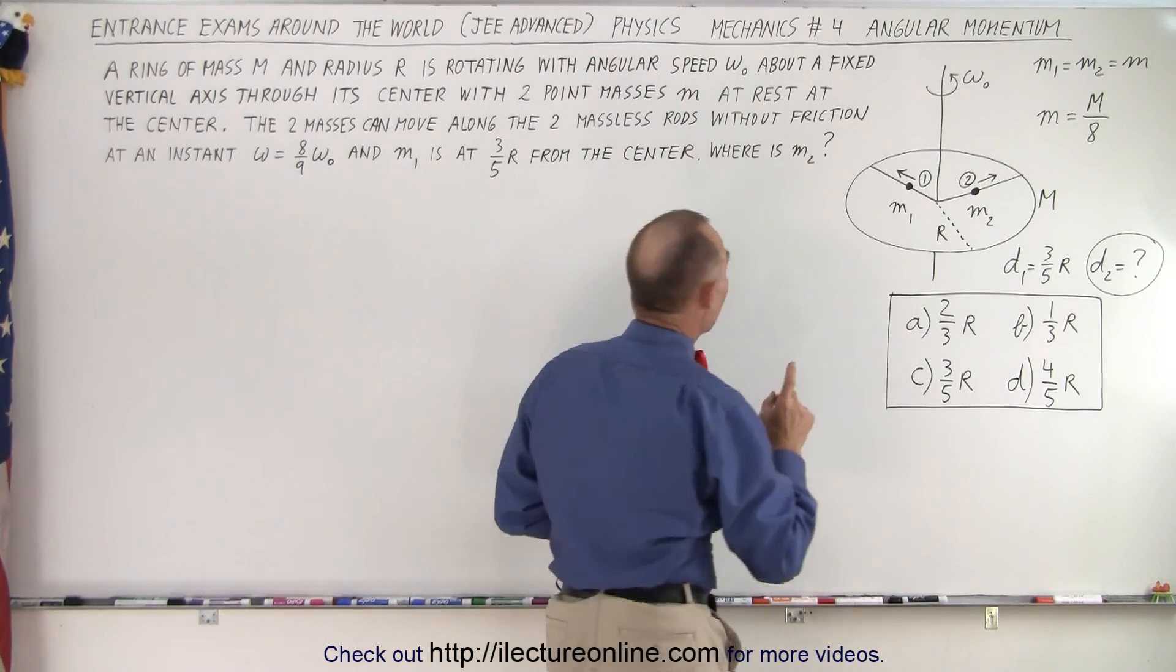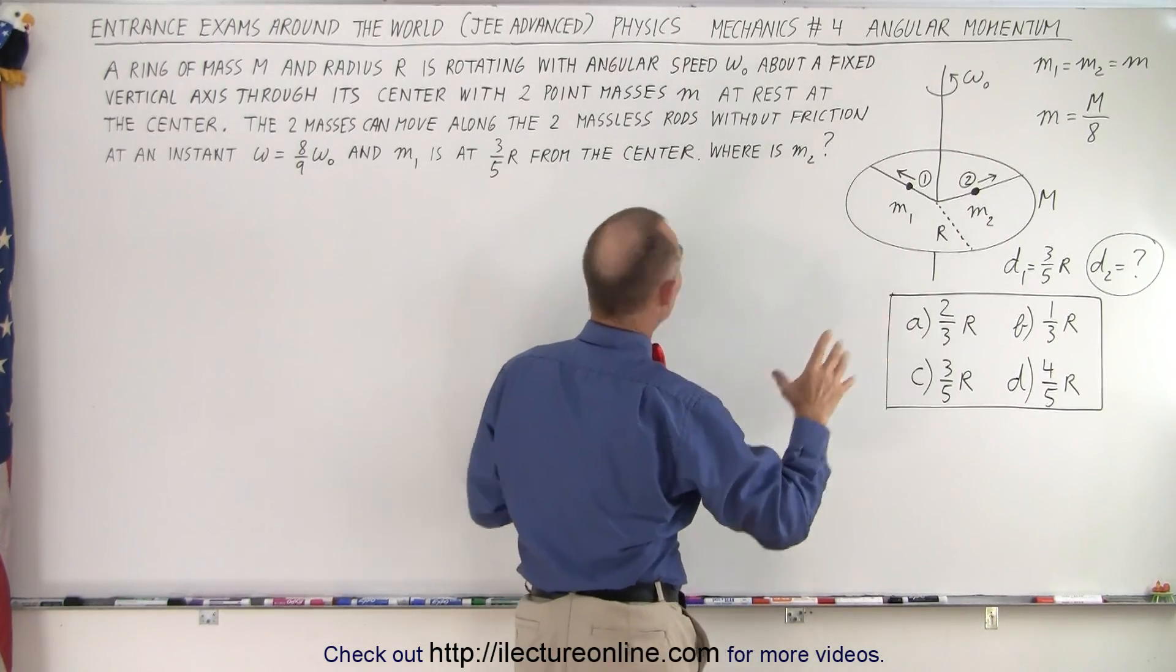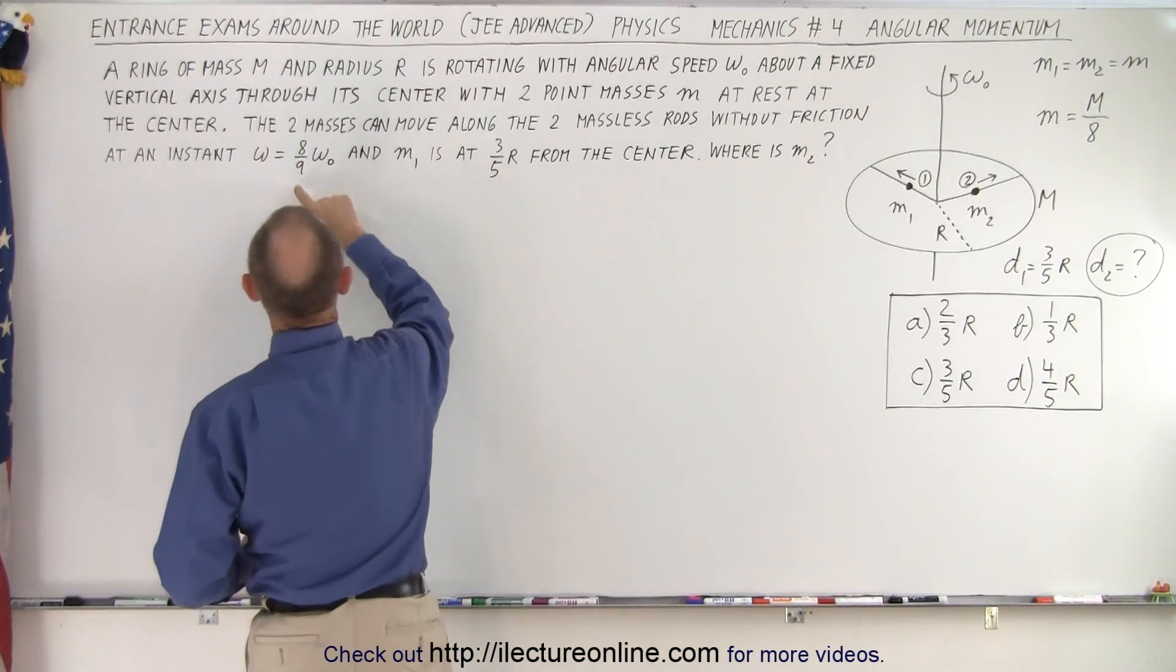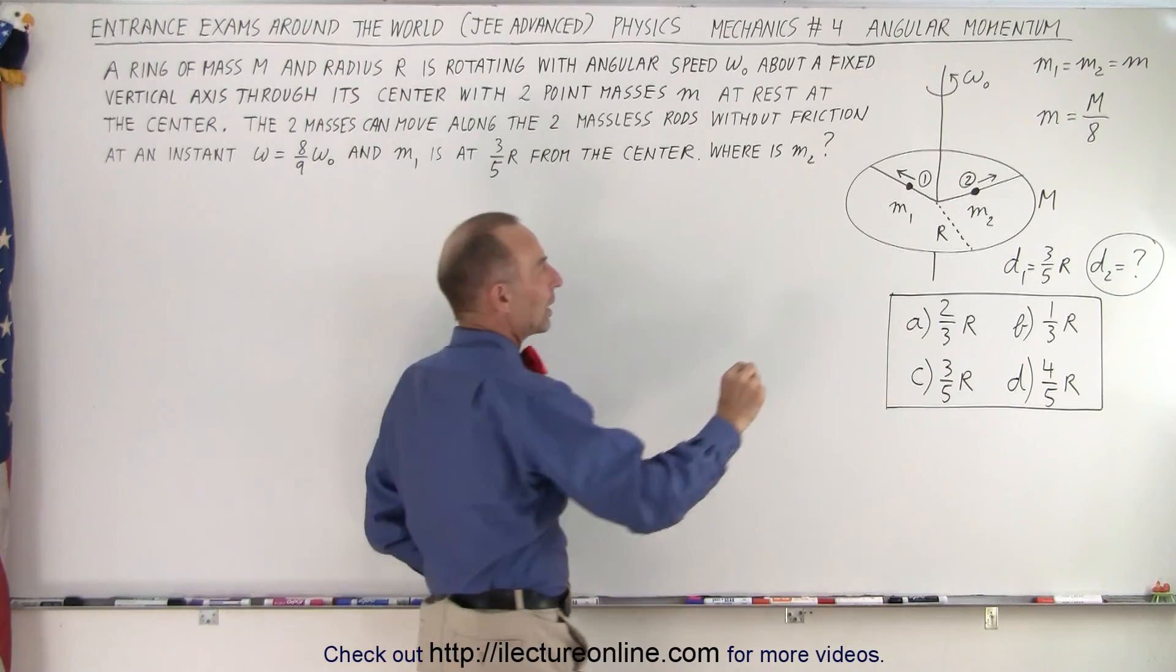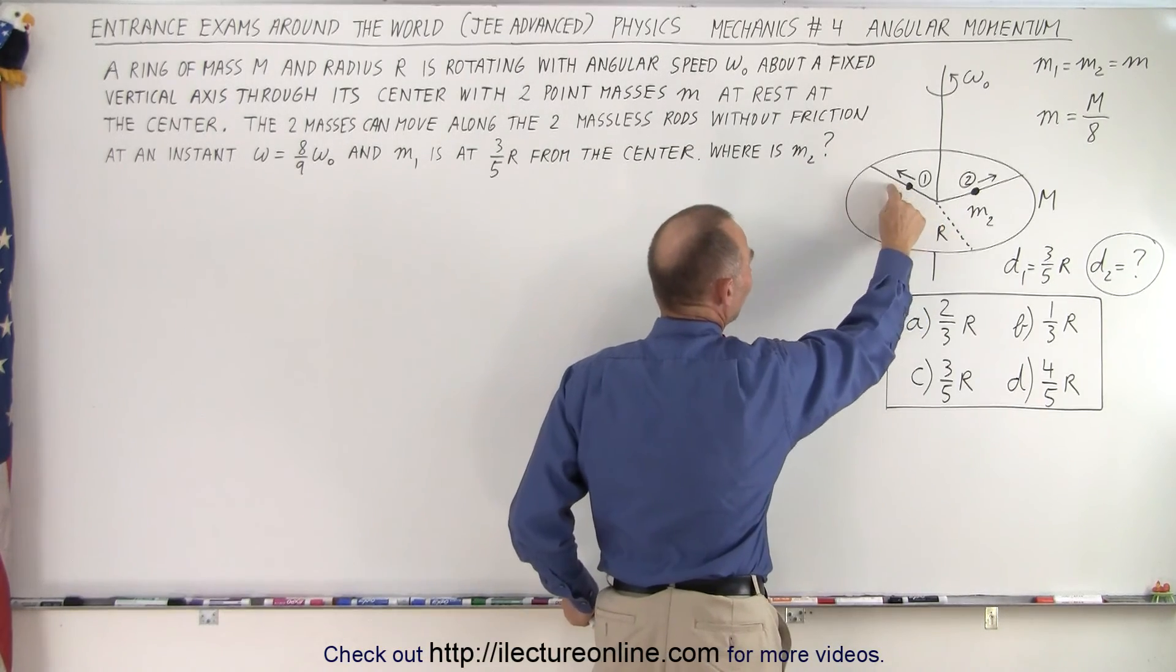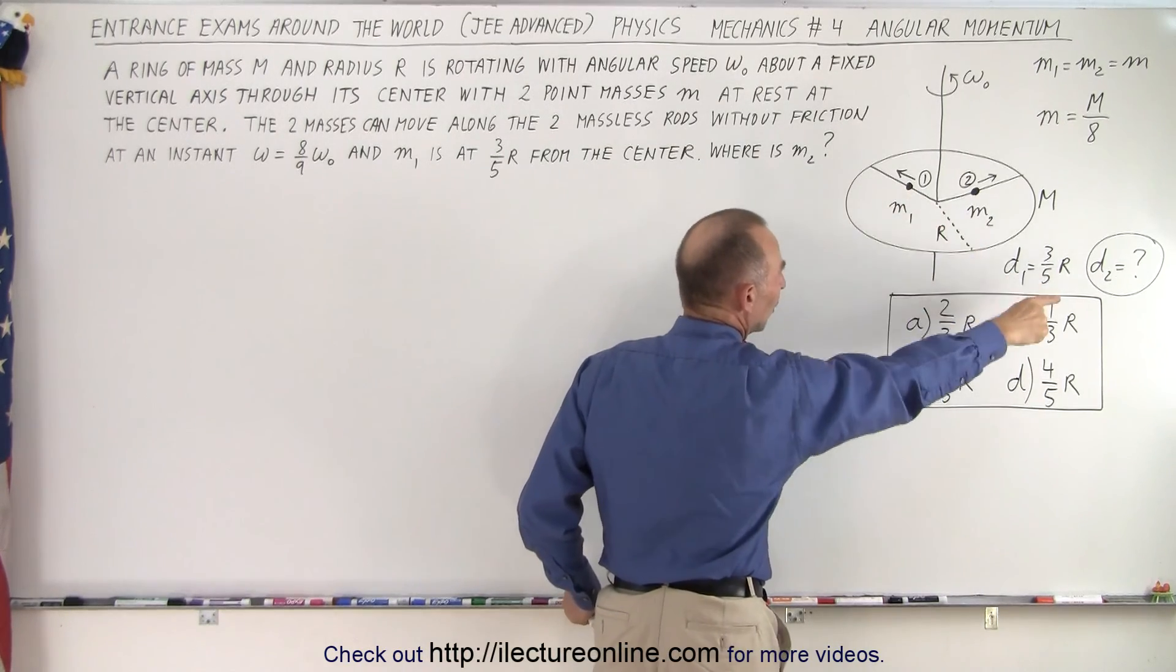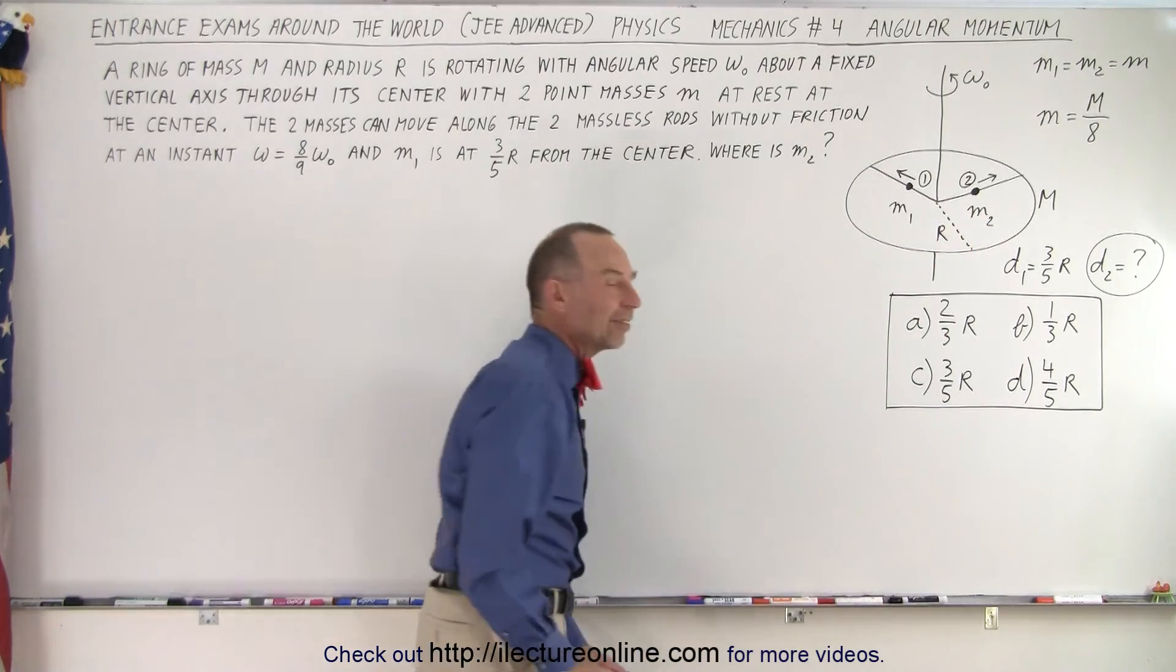They tell us that after the whole system slows down to eight-ninths of its original omega, one of the masses is now located at a distance of three-fifths r away from the center. And the question is, where is the second mass at that moment?